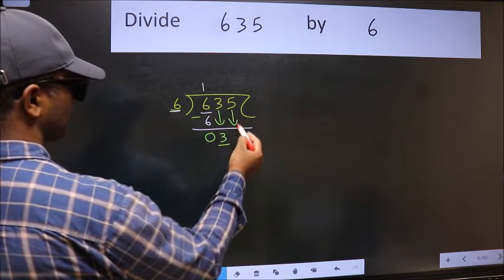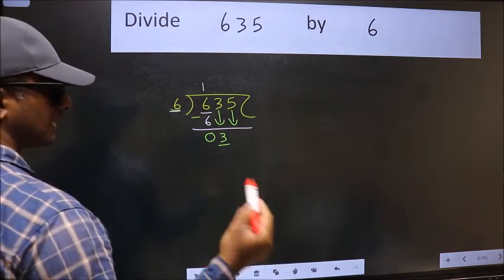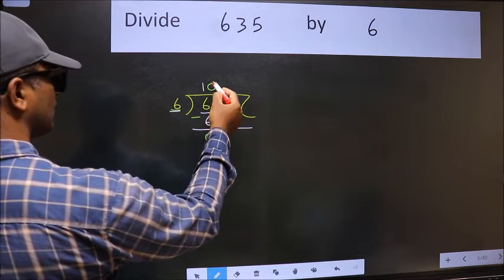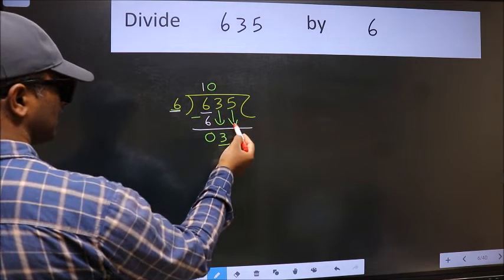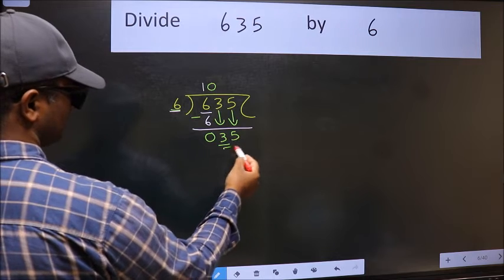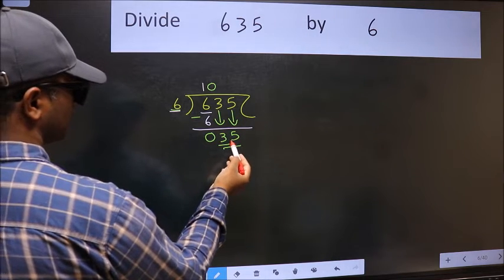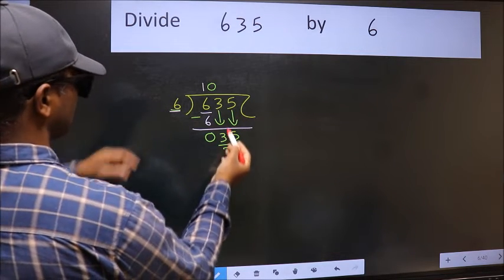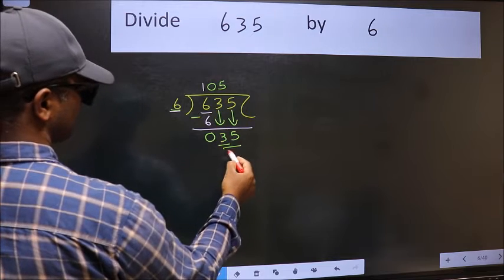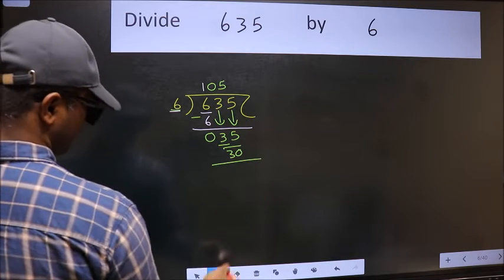The rule to bring down the second number is we should put zero here, then only we can bring this number down. So 35. A number close to 35 in the six table is six fives, thirty. Now we should subtract.